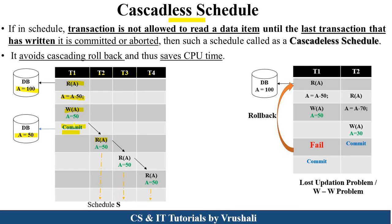After commit, the data is permanently stored in the database and all other transactions use those values. So T2 reads A equal to 50 and performs further operations. Similarly, T3 and T4 also read A equal to 50 and perform further operations. This is called a cascadeless schedule — transactions never fail because they always perform read operations only after commit.